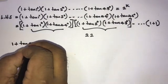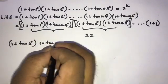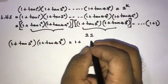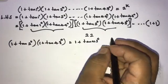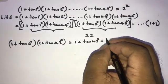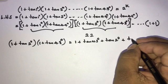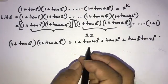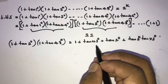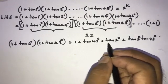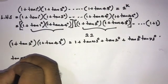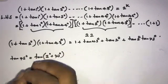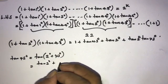Let's take a representative pair, for example (1 + tan2)(1 + tan43). Expanding: 1 + tan43 + tan2 + tan2·tan43. Now, we use the relation between 2, 43, and 45. We know tan(45) = tan(2 + 43), which equals (tan2 + tan43) / (1 - tan2·tan43).